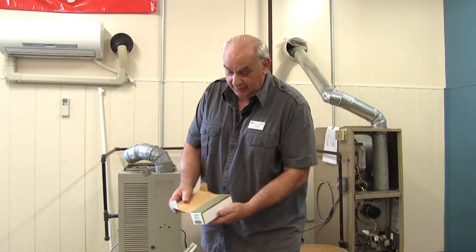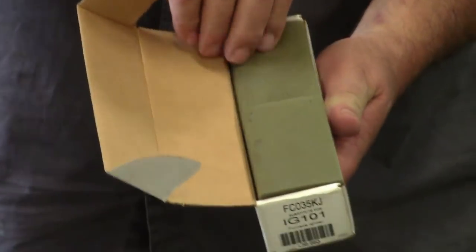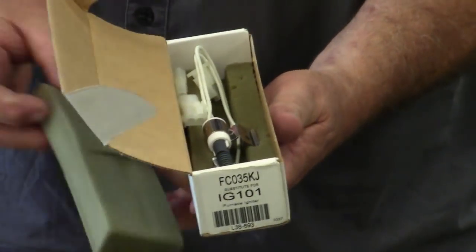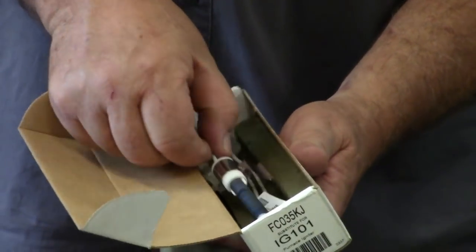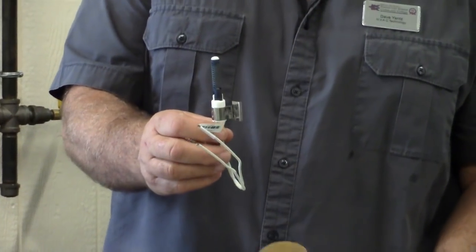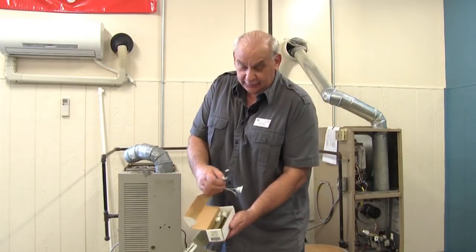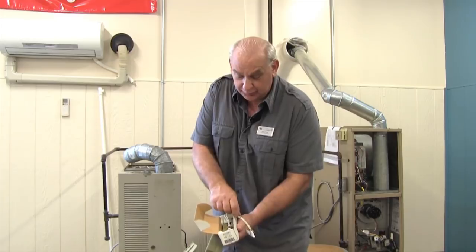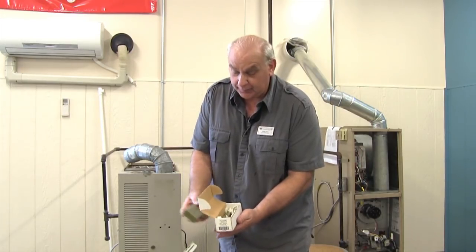When you buy an igniter, you'll notice it comes in a box that's very well foam insulated to protect the igniter inside. There's two styles - this is the round style, and you can see it's cut out to where it lays in that foam to protect that igniter from breaking.